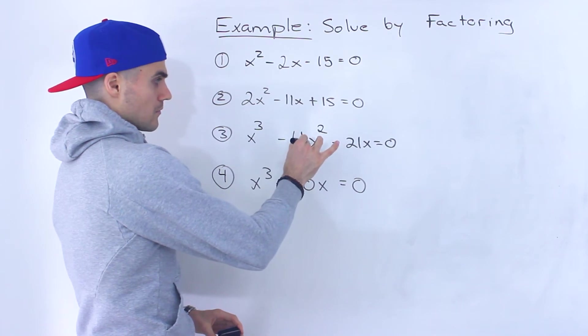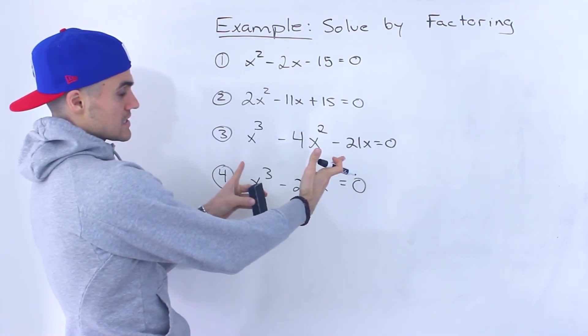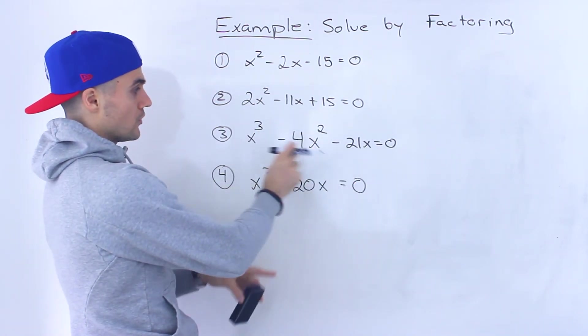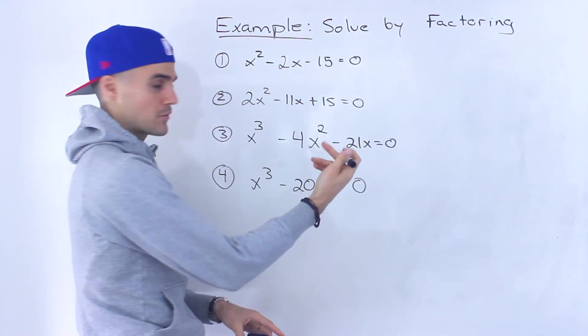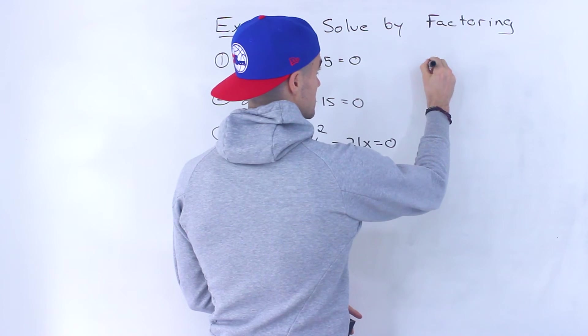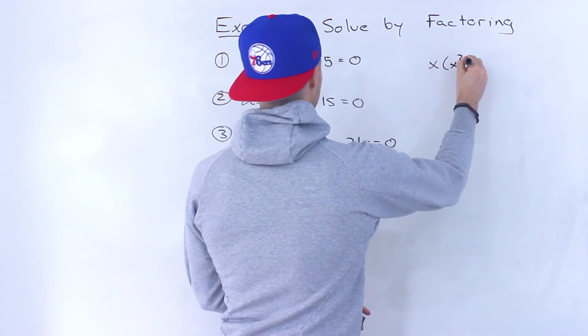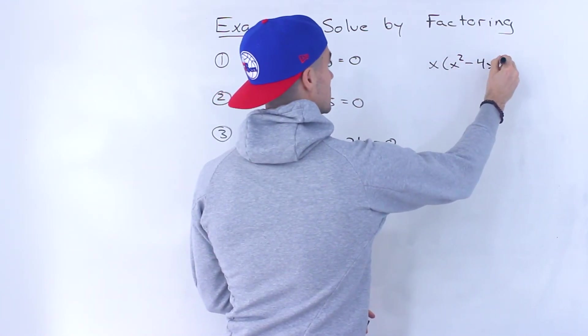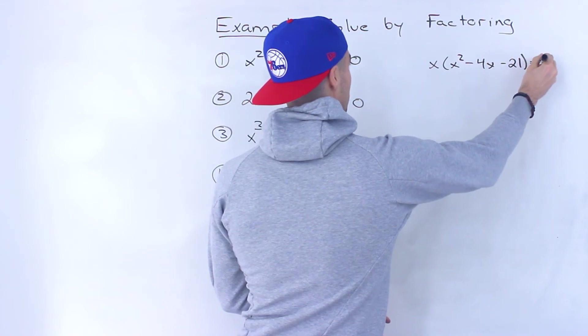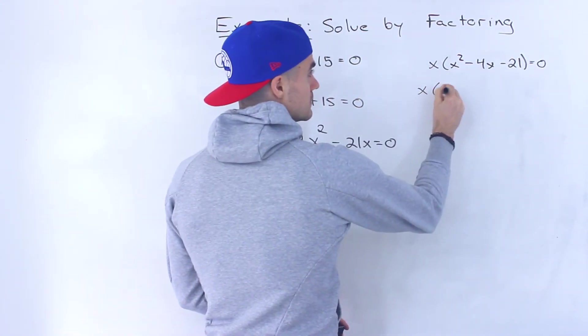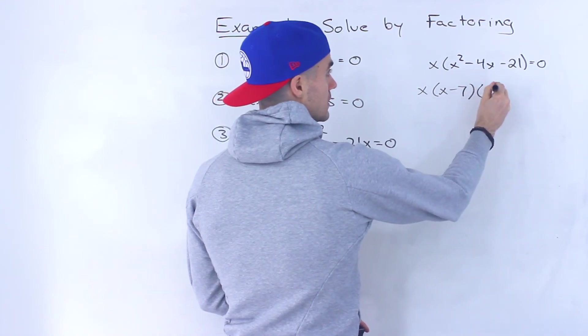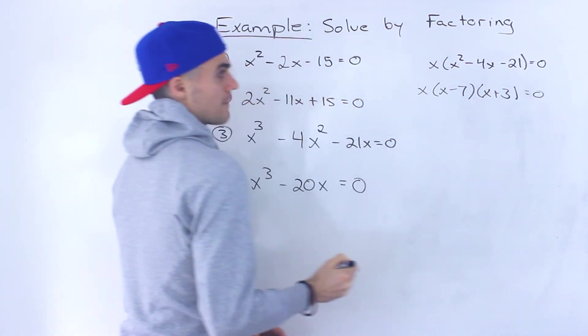So this here, notice this is a cubic function, and we can actually start off by factoring out an x from all the terms. So we could take out an x, and we'd be left with x² - 4x - 21 = 0. Then notice that this factors, if you follow that decomposition, to that.